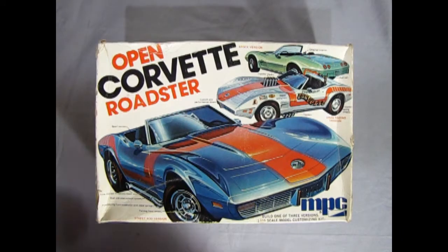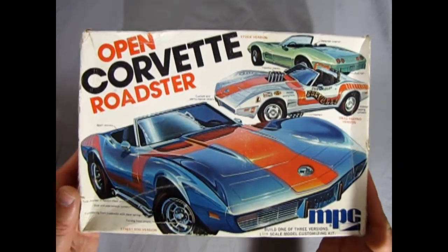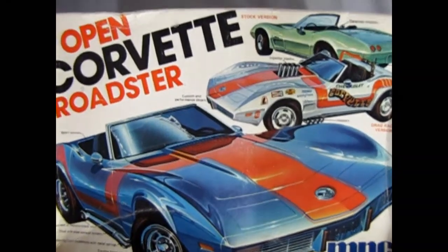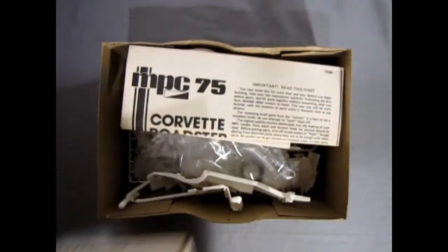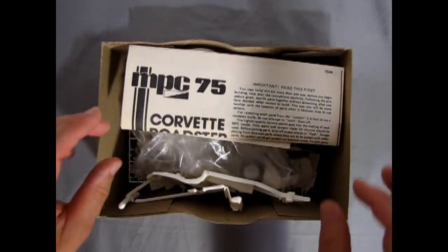However, there is one thing that I did notice while taking a look at this model car. They list the 454 cubic inch engine on the side of the box, and sadly, the 1975 Corvette never actually had that motor, for it was dropped in 1974.